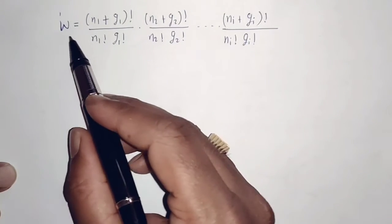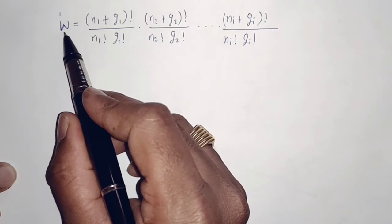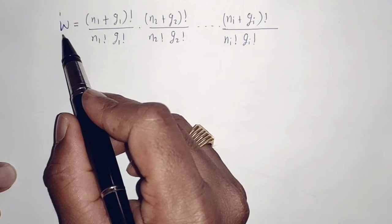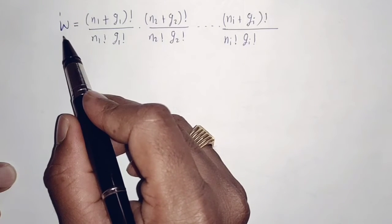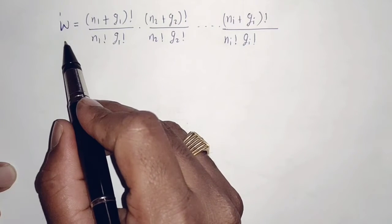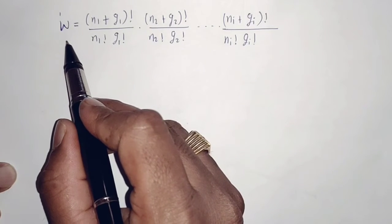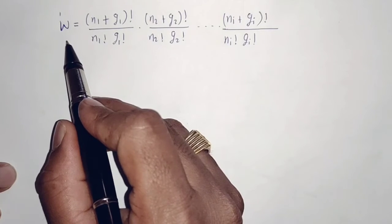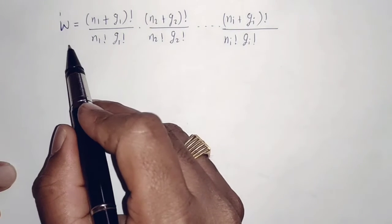In the last video, we discussed the total number of arrangements in Bose-Einstein statistics. In today's video, I am going to derive the distribution function expression for Bose-Einstein statistics.